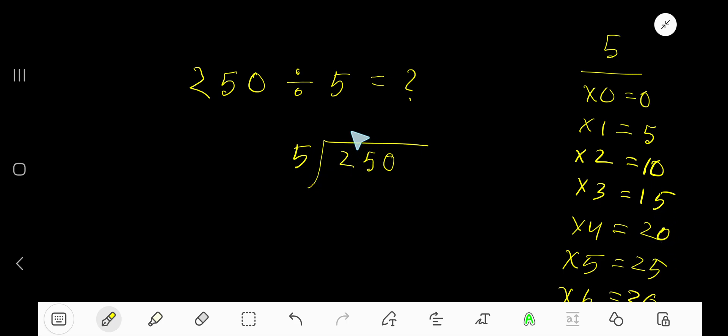5 goes into this 2 how many times? 0 times, as 2 is less than 5. So 0 times 5 is 0. Subtract, then bring down this 5. 5 goes into 25 how many times? 5 times, right. 5 times 5 is 25.